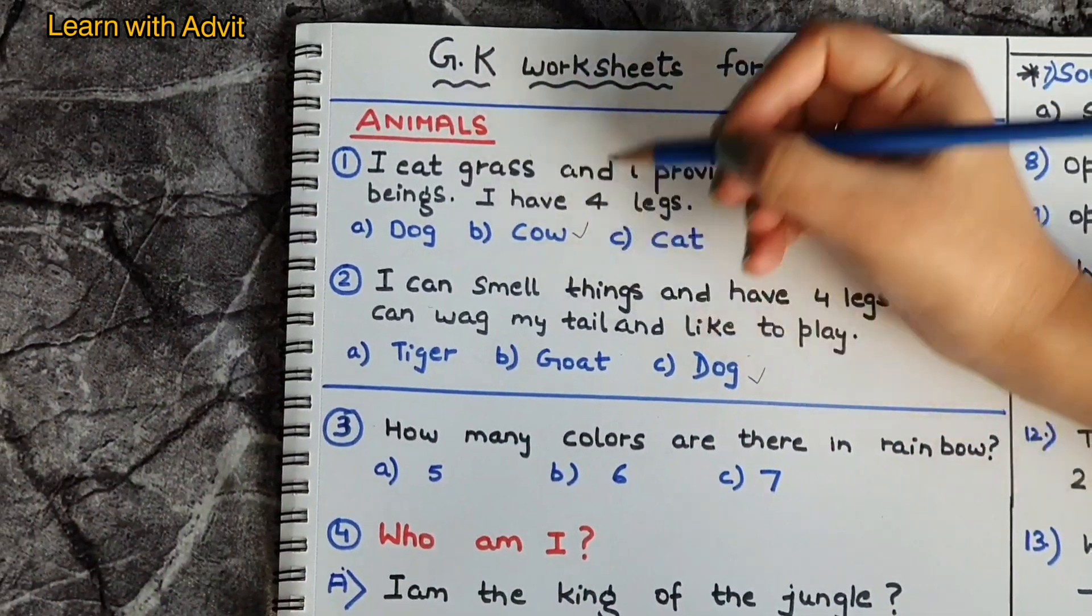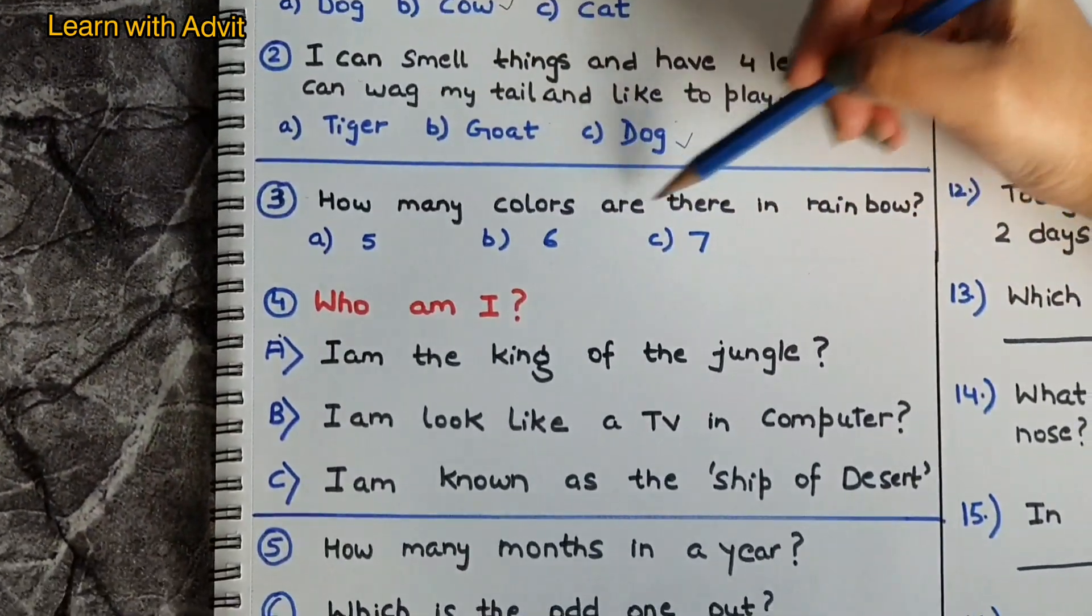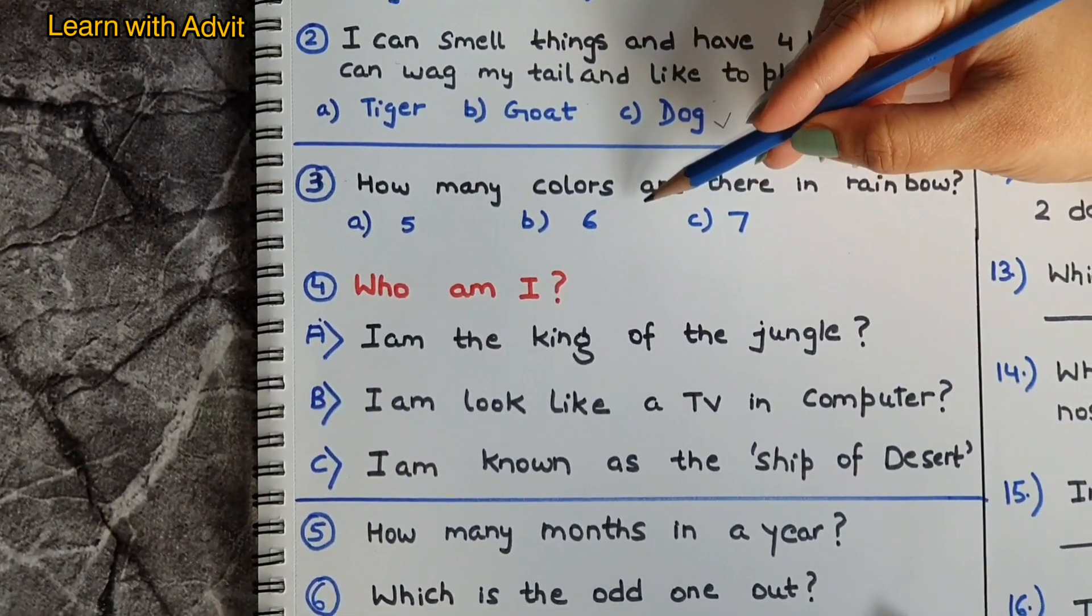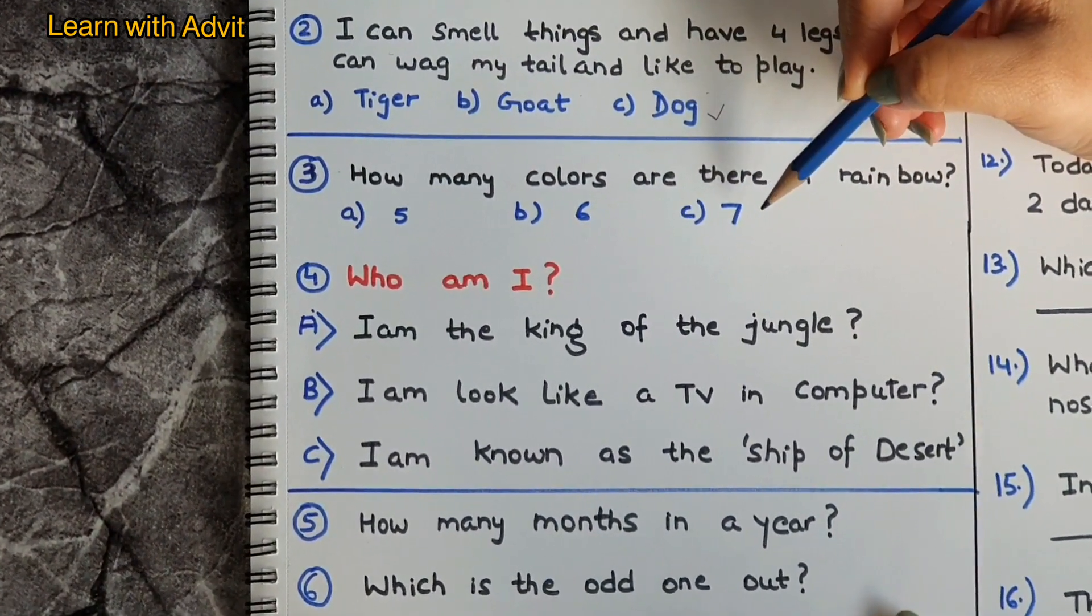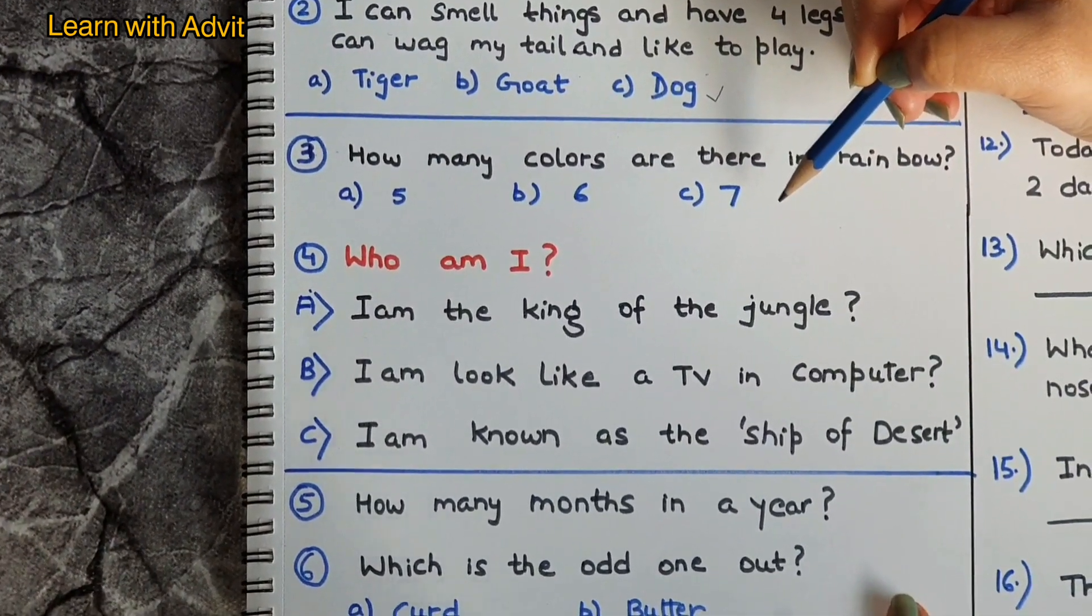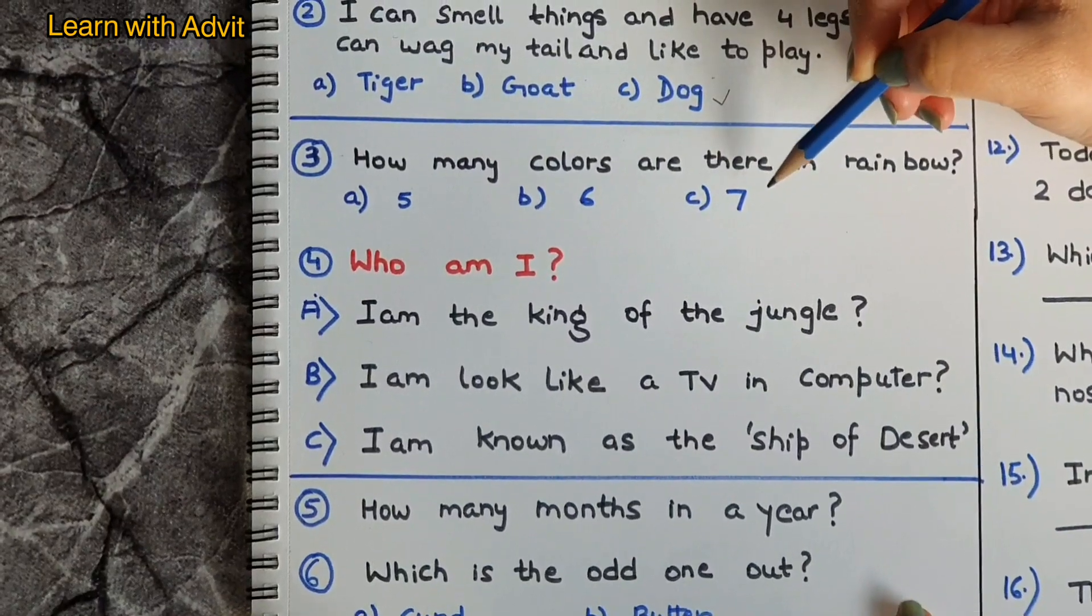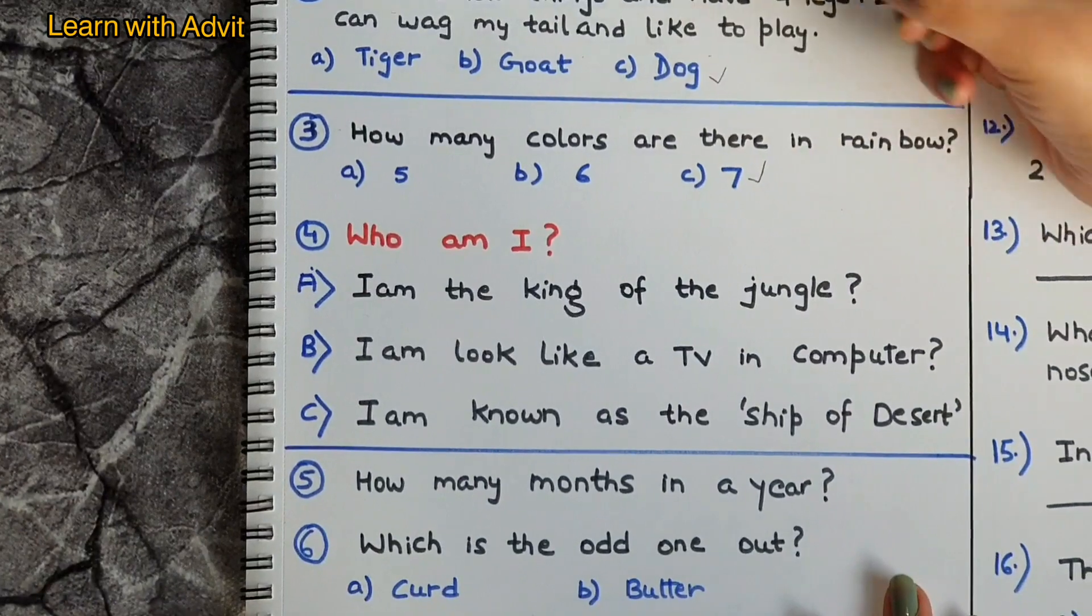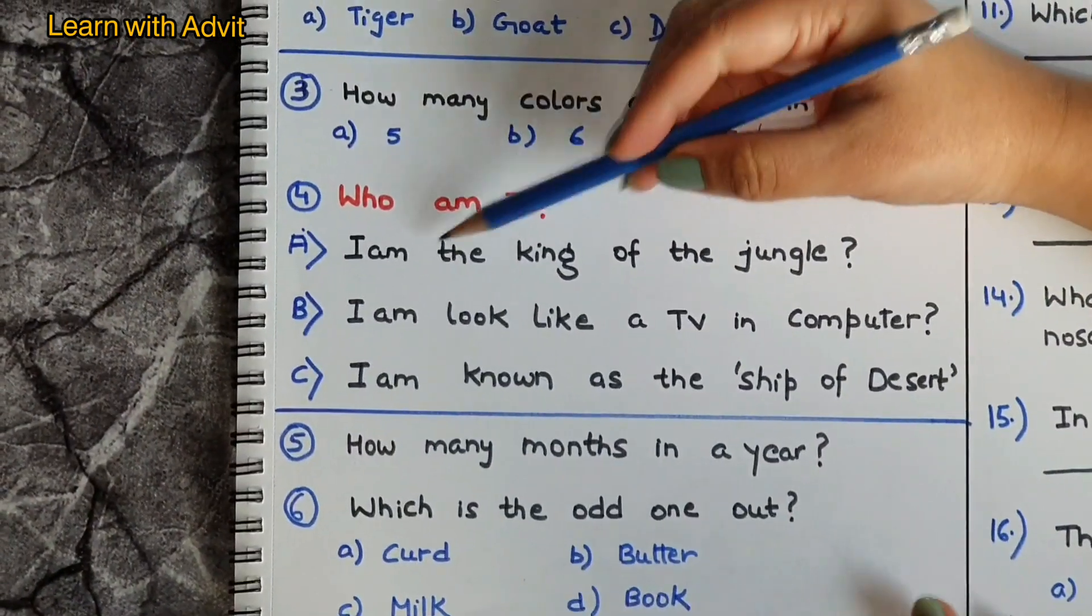How many colors are there in rainbow? Is it six? No, that is just the other kind of rainbow. How many colors are there? Seven, very good. Who am I?